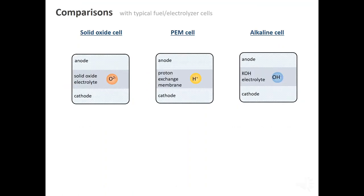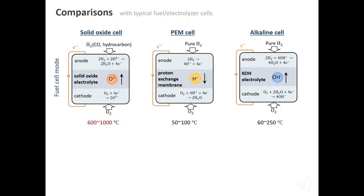Now, let's compare solid oxide cell to another two traditional cells: proton exchange membrane cell and alkaline cell. Basically, these cells are named after their electrolytes. The charge carriers are different. Let's first list the fuel cell mode. Here we use fuels to generate electricity.